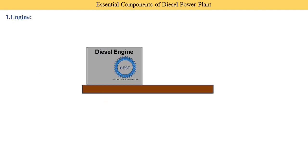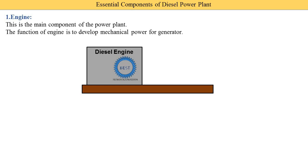The engine is the main component of diesel power plants. The function of the engine is to develop mechanical power for the generator. In a diesel engine, we supply diesel and it is converted into mechanical energy. Similar to our human body, we take food which contains chemical energy and it is converted into work energy and heat energy. Similarly, in a diesel engine, the fuel has chemical energy, which is first converted into heat energy by combustion, and then that heat energy is converted into work energy.